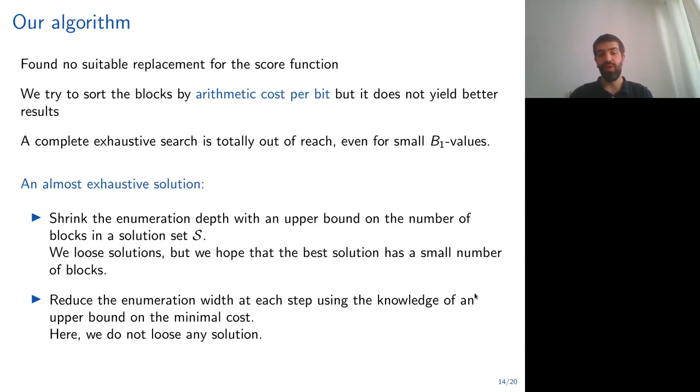We were not able to find a suitable replacement for the score function. We first tried to sort the blocks by arithmetic cost per bit, but it does not yield a better result. Here, by arithmetic cost per bit, we mean that we divide the arithmetic cost, the number of multiplications and squarings needed to compute the block, by the number of bits of the integers that the block is representing. So we wanted to do something more exhaustive, but a complete exhaustive search is totally out of reach, even for small B1 values.